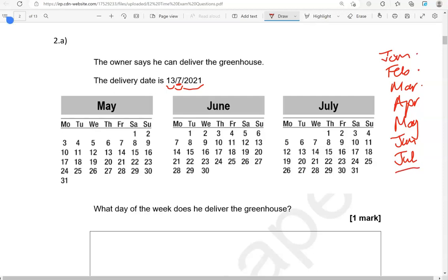First, second, third, fourth, fifth, sixth, seventh. So, we're focusing on July. It is the 13th of July. So, where is 13 here? That's this one. And it is a Tuesday.